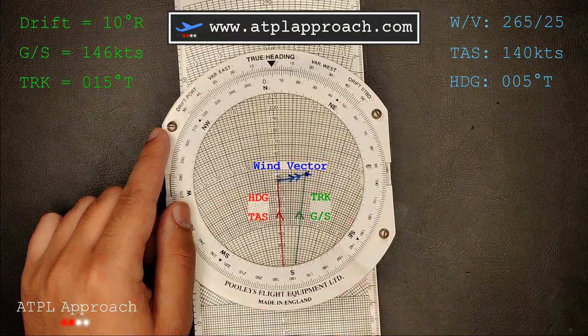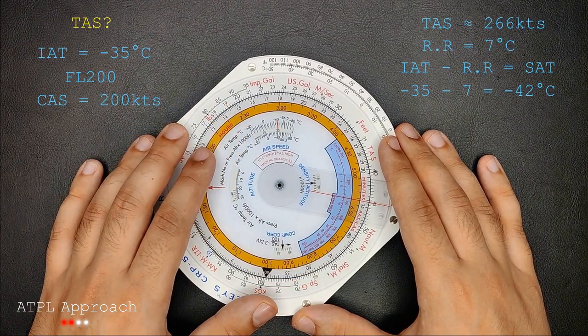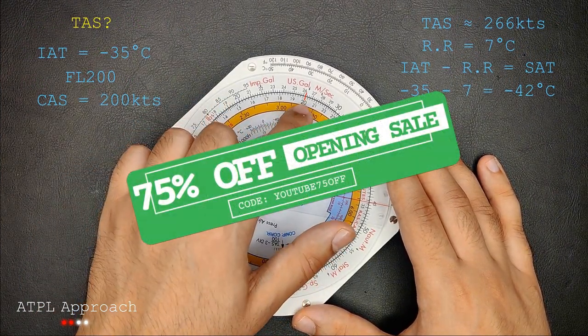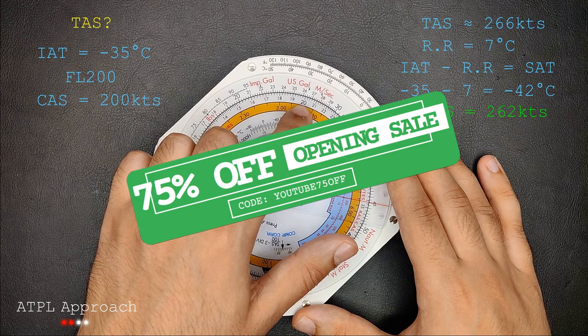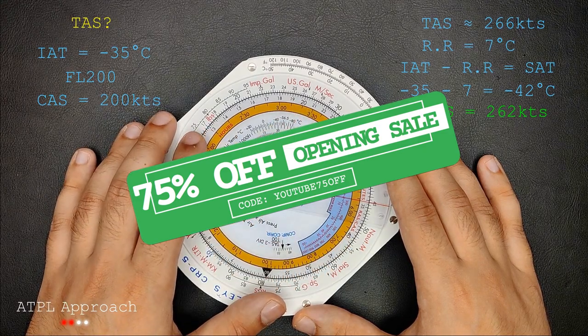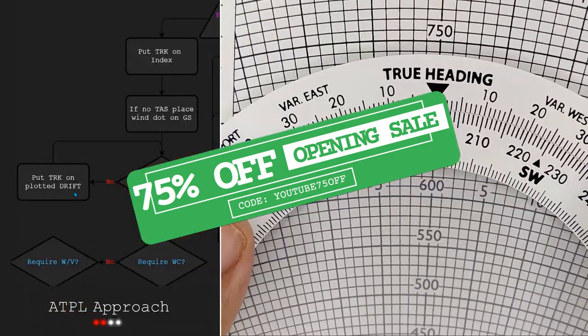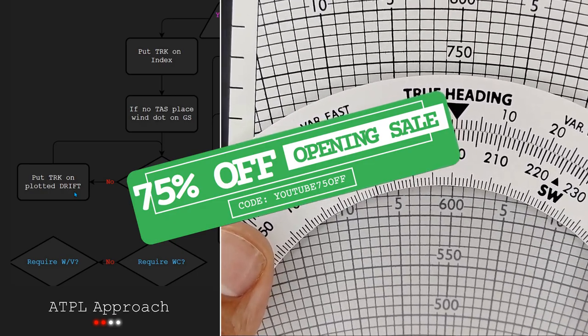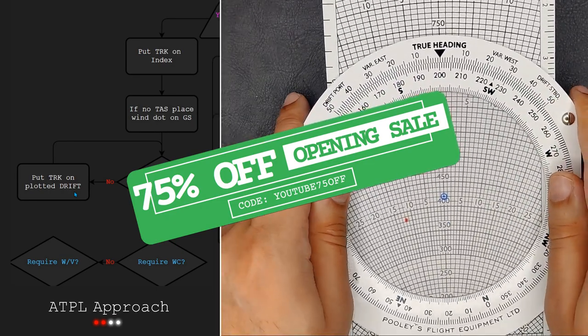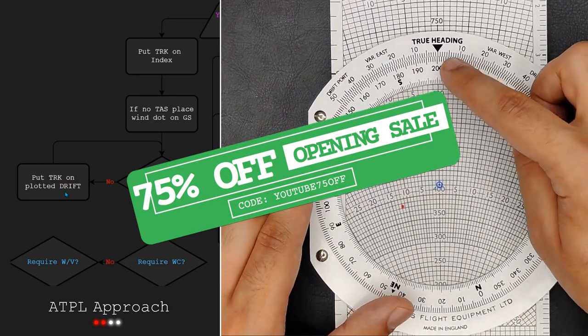If you act quickly, you'll be in luck. Currently, for a short time, there is an opening sale where the course is 75% off for those who use the discount code YouTube75OFF, all capital letters, no spaces. Take a look at this video's description down below to see the steps on how to use the code.